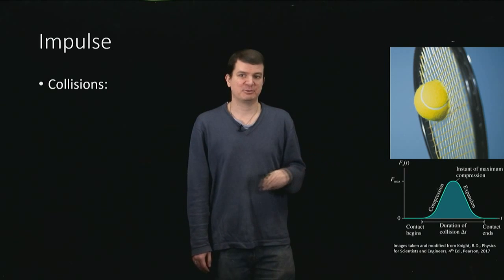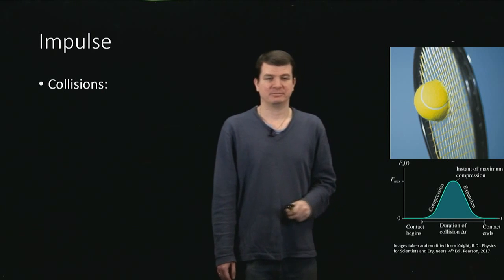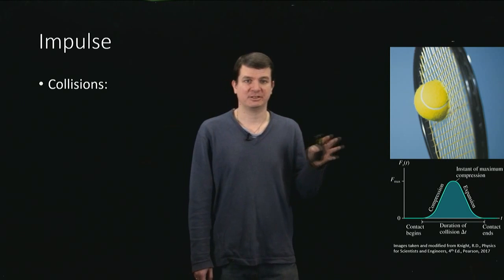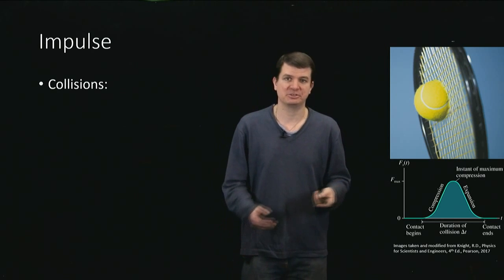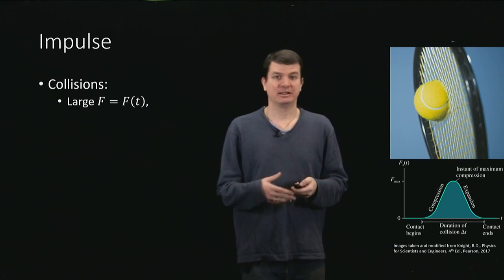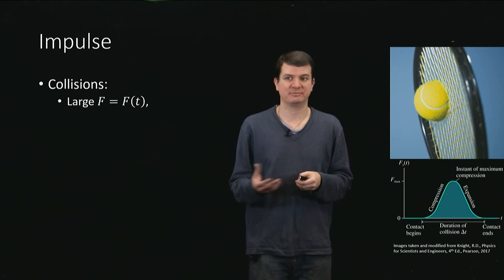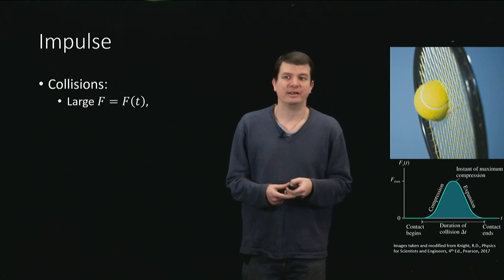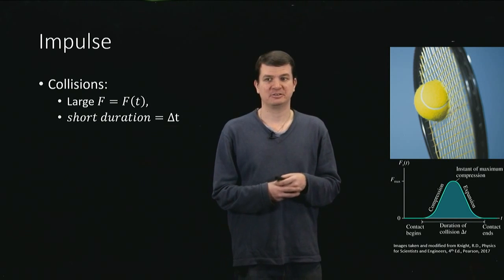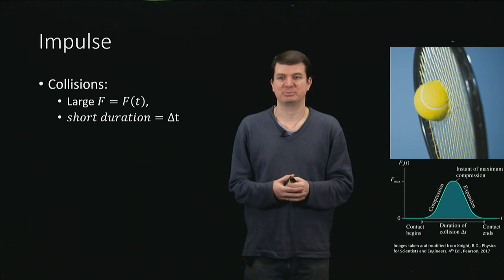This may seem to be quite specific, but actually this kind of graph, or at least something similar to it, applies to pretty much every collision. The deformation may not be obvious, but it usually happens, which means that every collision can be talked about in terms of having a very large force applied that varies with time, so it's a function of time. And that large force typically is only applied for a short duration. And the duration of that collision we'll call Δt, as we have down here in this plot already.